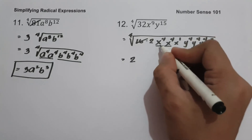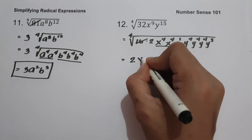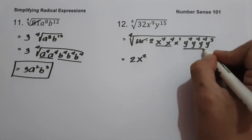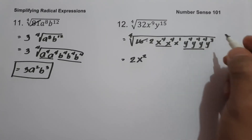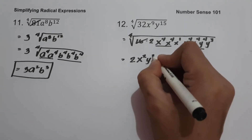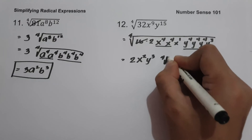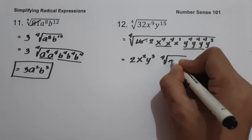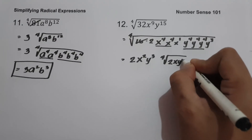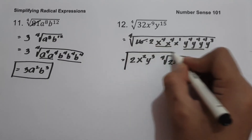We have 2 x-to-the-4th terms giving x squared, and 3 y-to-the-4th terms giving y cubed. So our answer is 2x squared y cubed, fourth root of 2xy cubed.